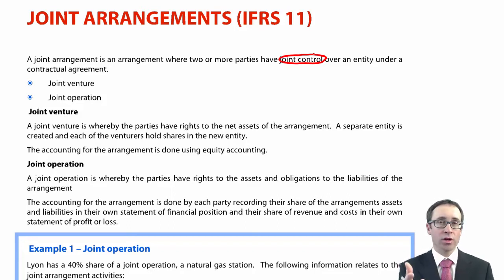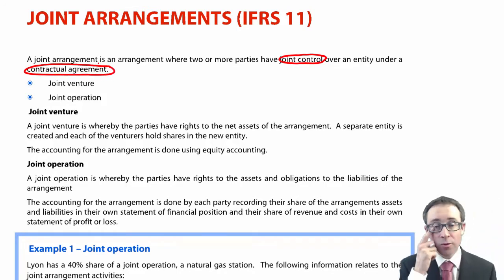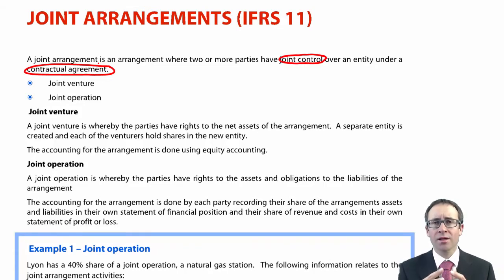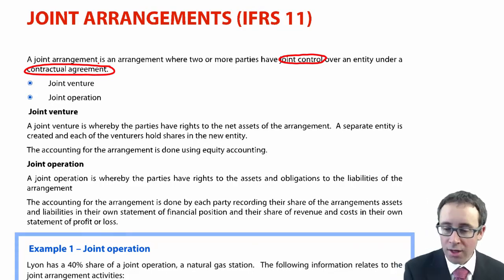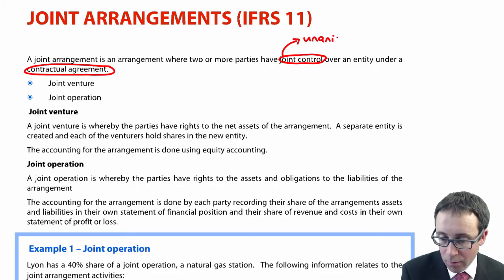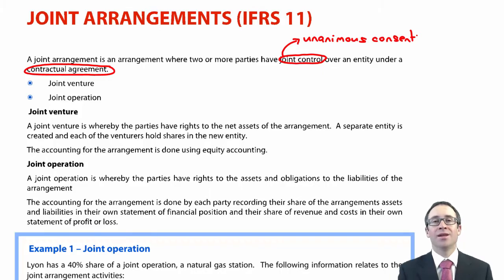What we have to have essentially for there to be joint control is that there has to be a contractual arrangement or contractual agreement in place that says if both parties come together, decisions will happen. If two parties don't come together, then nothing will happen. There needs to be unanimous consent — a unanimous decision whereby all parties agree, otherwise nothing happens.